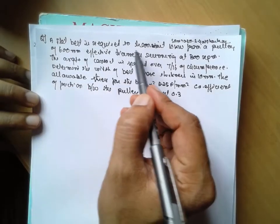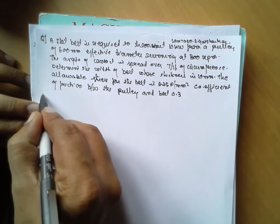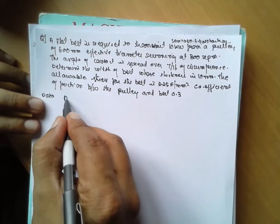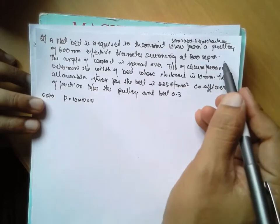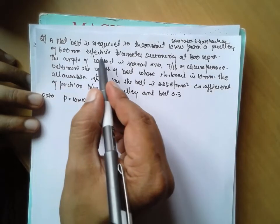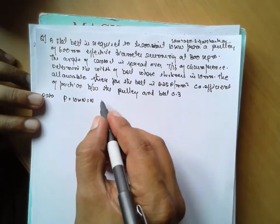A flat belt is required to transmit 10 kilowatt. P is equal to 10 kilowatt from a pulley of 600 mm effective diameter. D is given 600 mm.